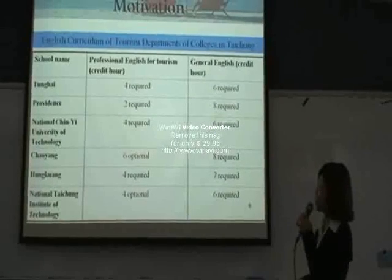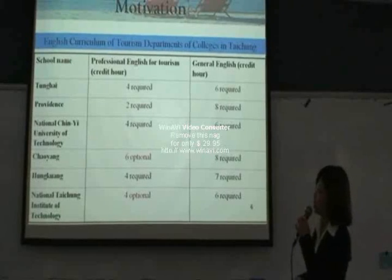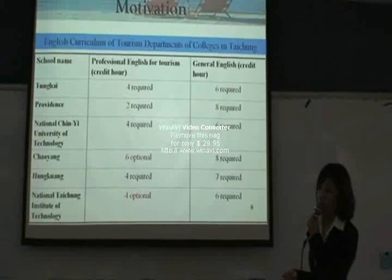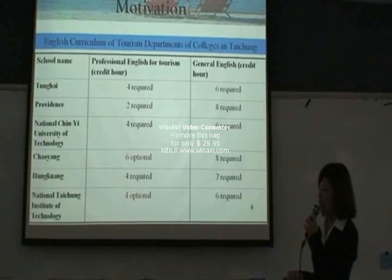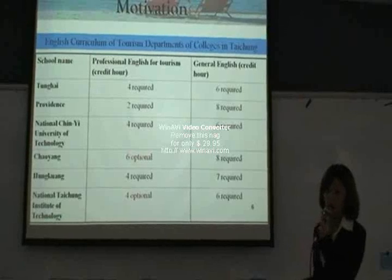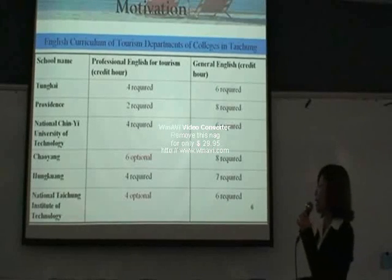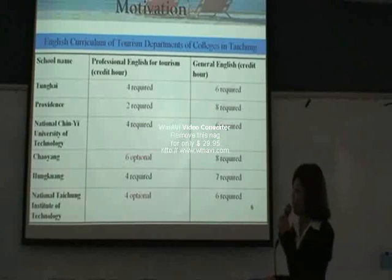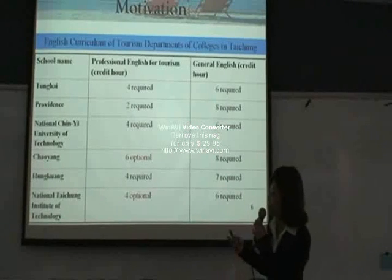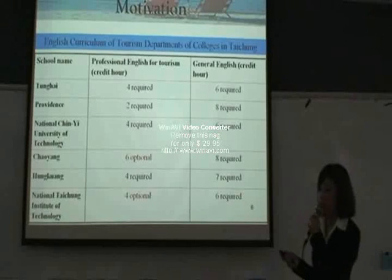Here comes the motivation of the study. Let's take a look at this table, which was adopted from six colleges: Donghai University, Providence University, National Chengyu University of Technology, Chaoyang University, Hong Kong University, and National Chengyu Institute of Technology. From this table, we can see that most colleges have asked students to take tourism English before graduation. However, there is an exception for Chaoyang University and National Chengyu Institute of Technology, because courses there are optional.